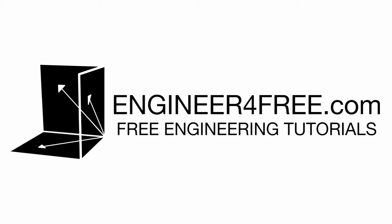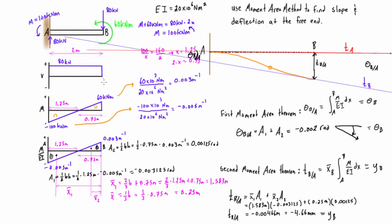All right guys, welcome back. You might recognize this work here on the screen from a couple of videos ago where we used the moment area method to find slope and deflection at the free end of this cantilever beam that had more than one load. It's got a point load there and applied moment on the end.